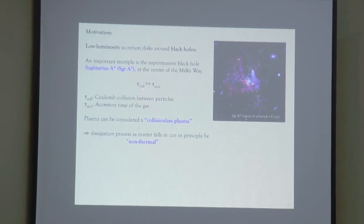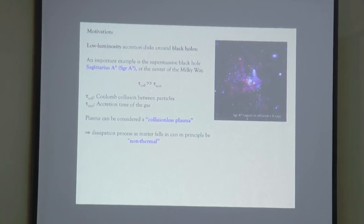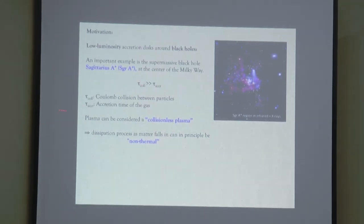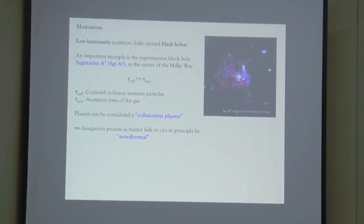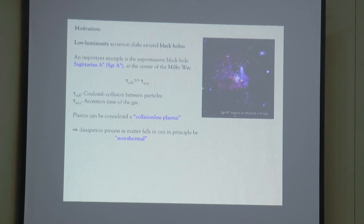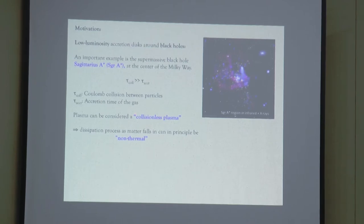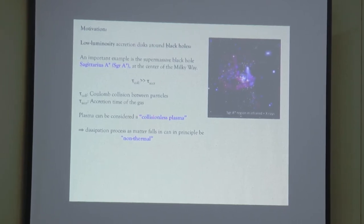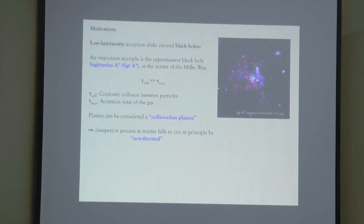That implies that as matter falls into the black hole in Sagittarius A star, the plasma behaves as a collisionless plasma. That fact suggests that the dissipation of energy as matter falls into the black hole doesn't necessarily produce thermal distributions of particles, but probably one can expect the presence of non-thermal features.